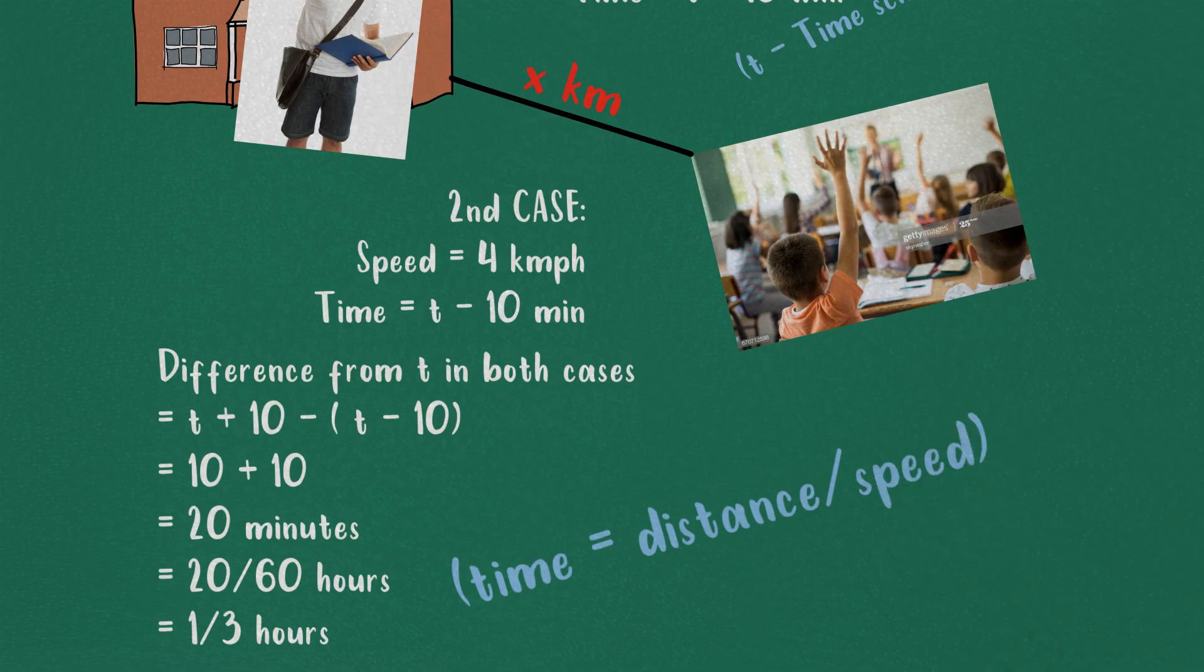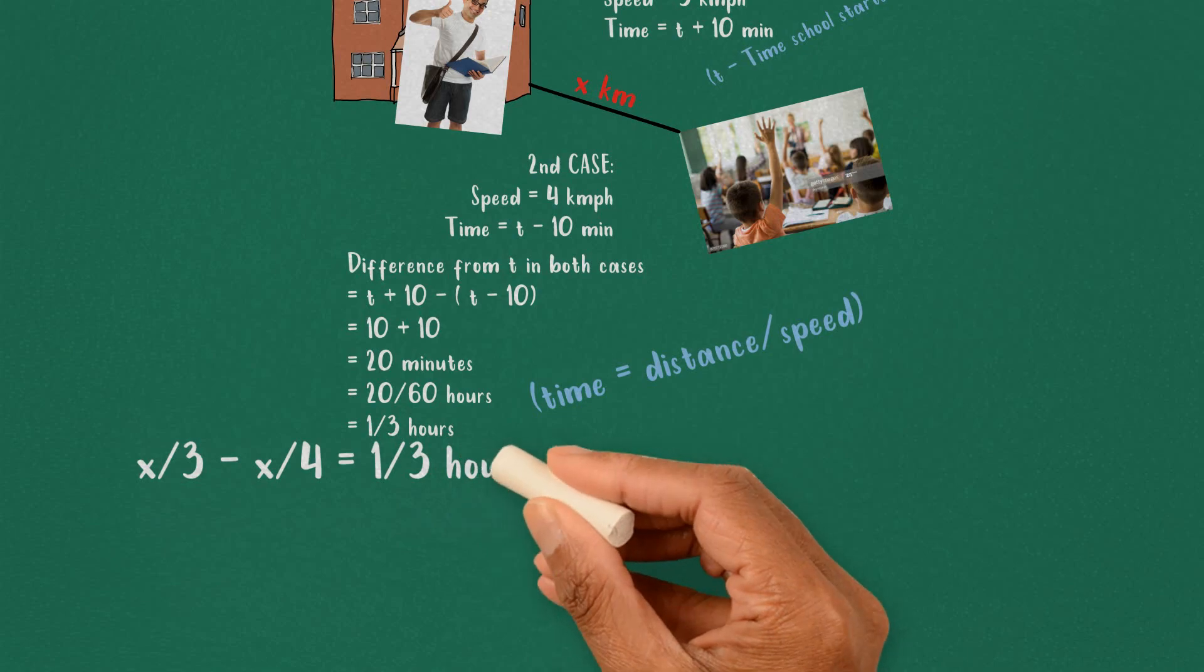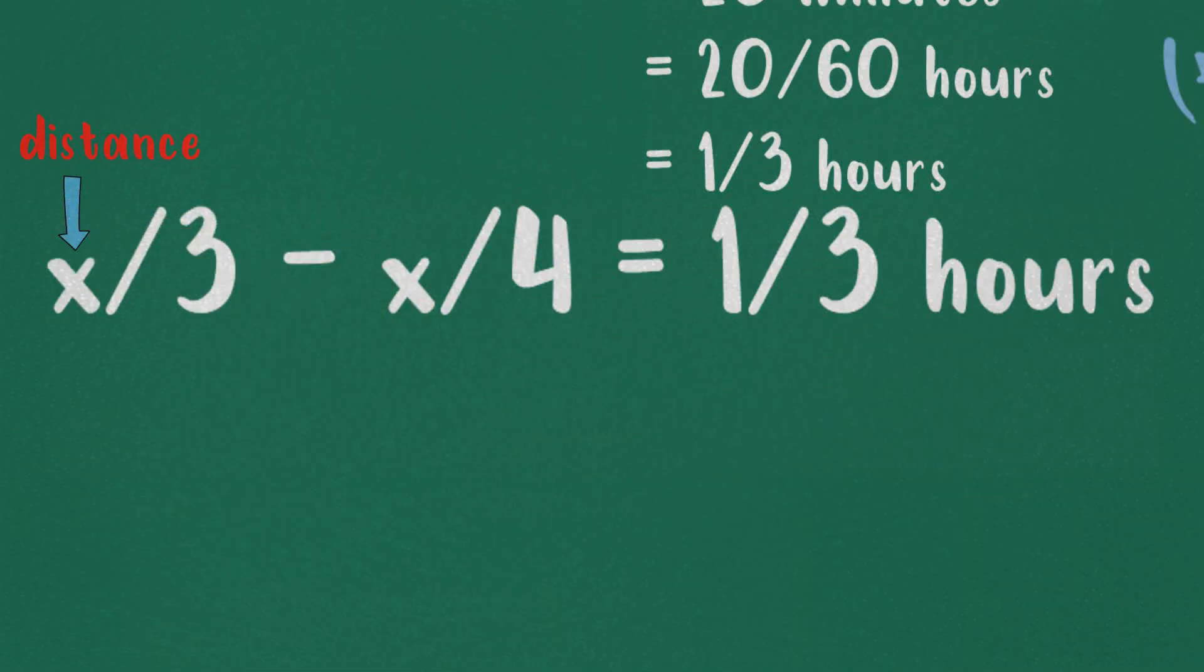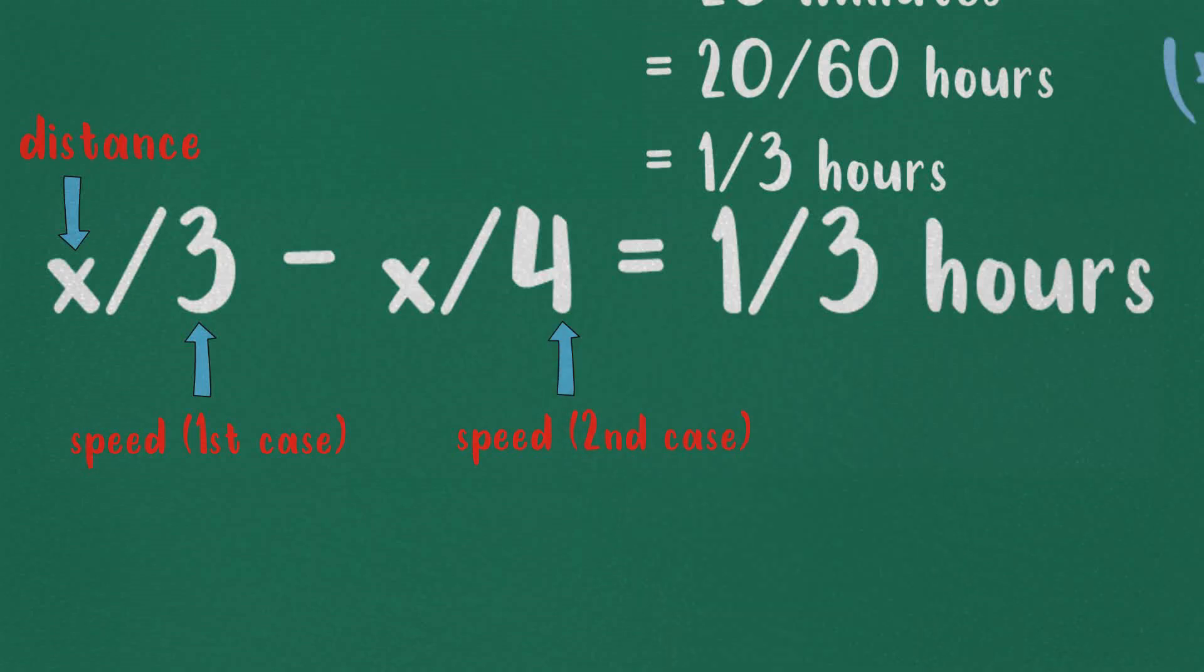We know time is the ratio of distance and speed, so we can construct the following equation: x by 3 minus x by 4 is equal to 1 by 3 hours. Where x is distance, 3 kilometers per hour is speed in case 1, and 4 kilometers per hour is speed in case 2.